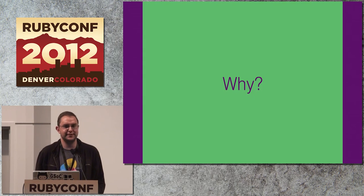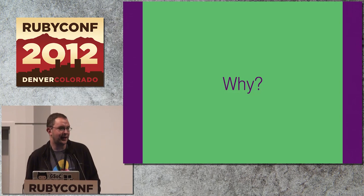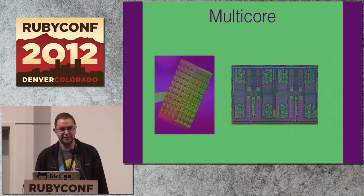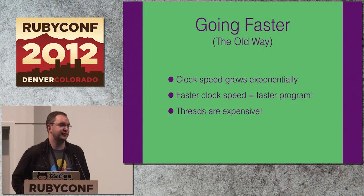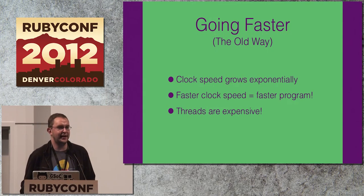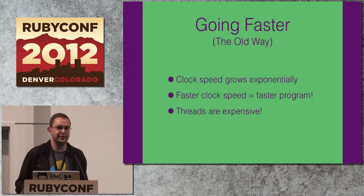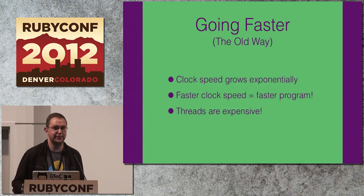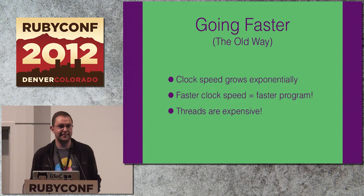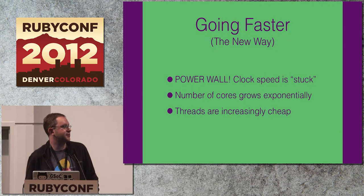You might be wondering: why should I care? Why should I use threads? The main reason is multi-core. In the past, we got speed for free — we could wait for the hardware people to keep cranking up the clock, and CPUs would get faster, so your code would get faster. Also in the past, threads used to be really expensive. Linux, for example, took a long time to get a constant time scheduler that could handle as many threads as you wanted with no overhead.